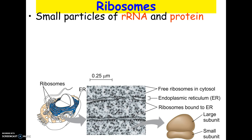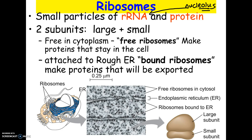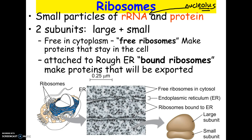Ribosomes are little particles made of two things: rRNA and protein. Remember that the rRNA was made by the nucleolus, so there's a relationship between the nucleolus and ribosome production. A ribosome is actually made of two pieces — a large subunit and a small subunit. You don't need to know the specific names, just that they're made of two pieces, a big one and a small one.